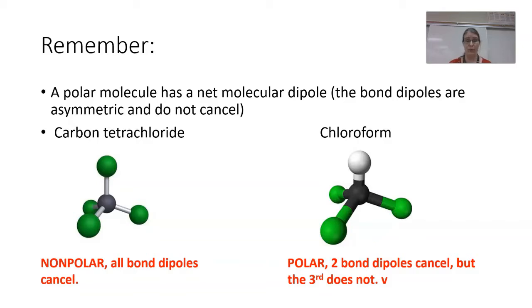For example, carbon tetrachloride most certainly has four lovely polar bonds between carbon and chlorine. But because they all have an equal and opposite angle, all of the bond dipoles cancel. And carbon tetrachloride is overall a non-polar molecule.